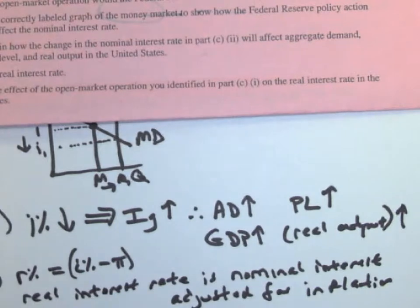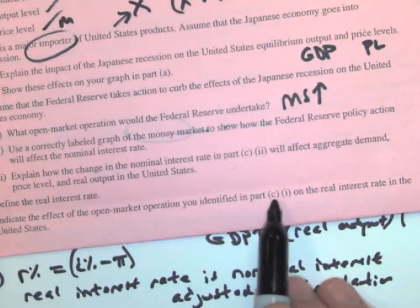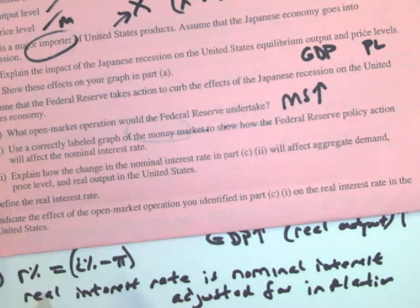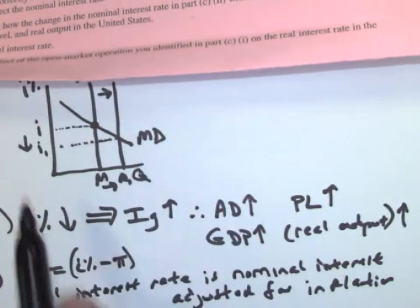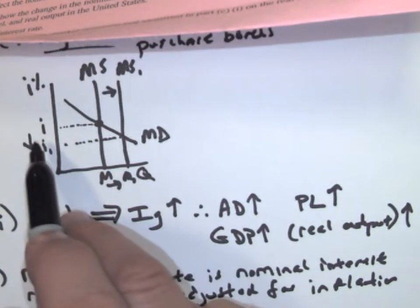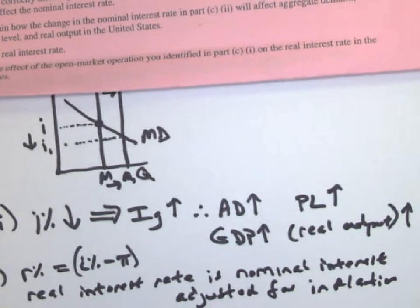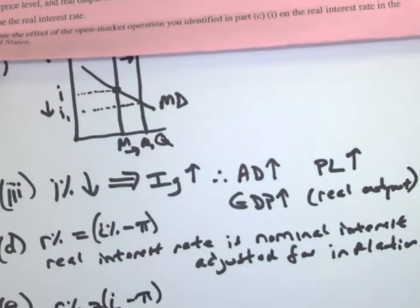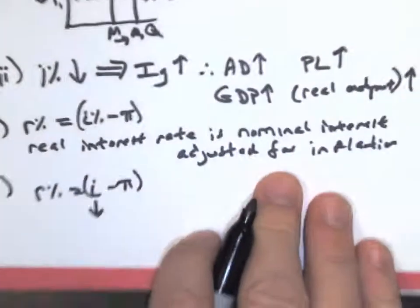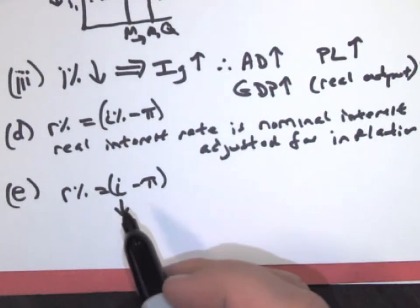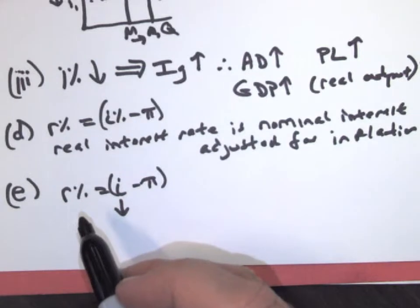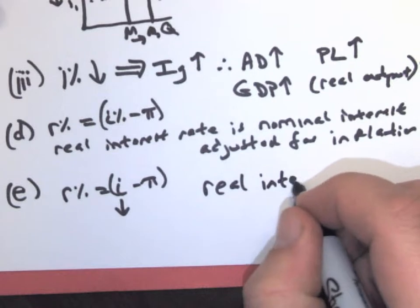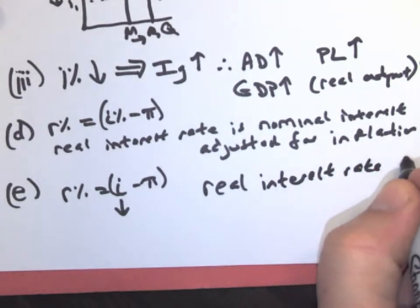Now we're down to part E. Indicate the effect of the open market operation you identified in part C on the real interest rate in the United States. So in part C, when we found what the money supply does, if you just look at this formula, I know that the nominal interest rate is dropping. So you'll get one point for indicating the real interest rate is going to fall because the nominal interest rate falls and price level increases. So if we plug in our formula, real interest equals nominal minus inflation. And I know that this decreased. Let me do that so you can actually see what I'm doing. So if that's going to decrease, what's going to happen to that one? It's going to decrease as well. So the real interest rate is going to decrease.